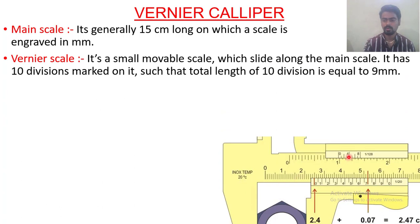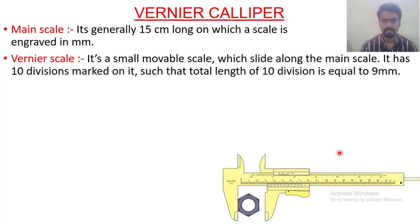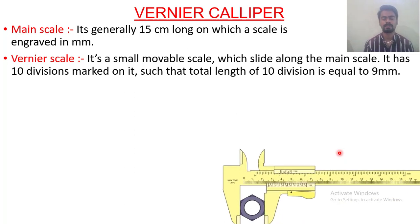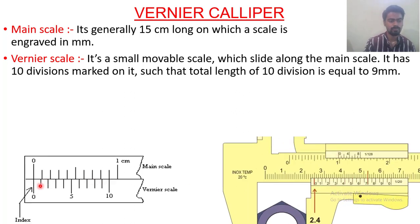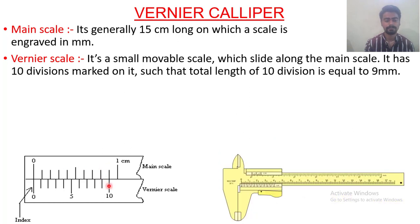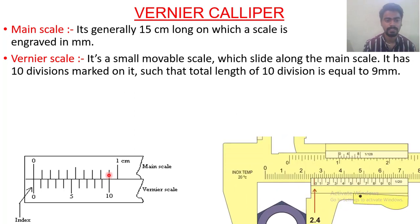The second part is the Vernier scale. You can see this movable scale — look at the pointer — this movable scale is generally known as the Vernier scale. If you compare the main scale and the Vernier scale, you will find that the 10th division of the Vernier scale equals the 9th division of the main scale. So the 10th division of the Vernier scale is coinciding with the 9th division of the main scale.